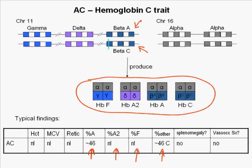Individuals with hemoglobin C trait have no significant morbidity or mortality. Their blood counts are typically normal, but they do have target cells in the peripheral smear.